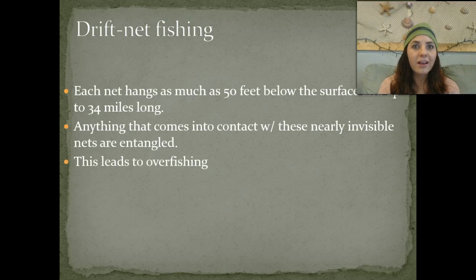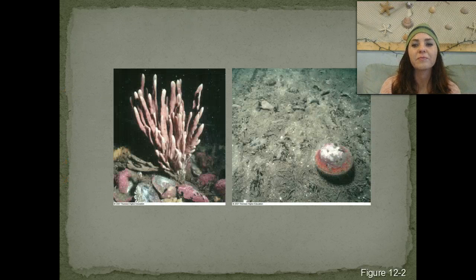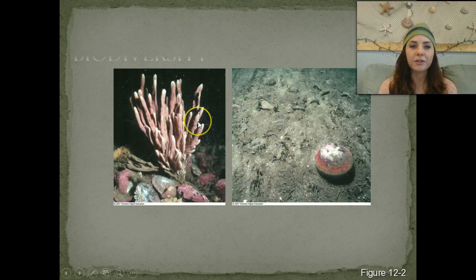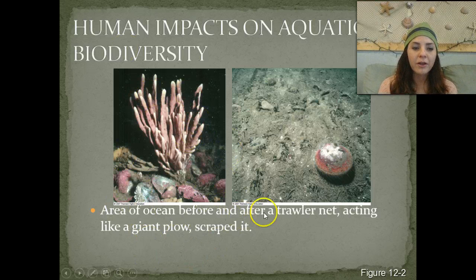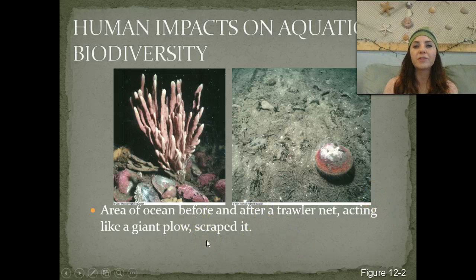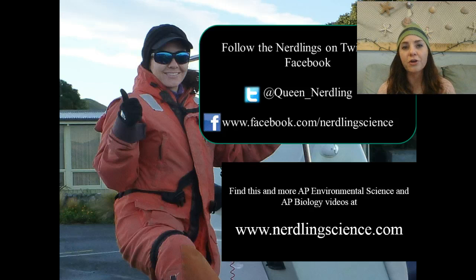Many unwanted fish, marine mammals, turtles, and birds are caught in drift nets, contributing to overfishing. This is a before and after picture of an area of the ocean before and after a trawler net was deployed—it basically acted like a giant plow and scraped pretty much everything off of the area.